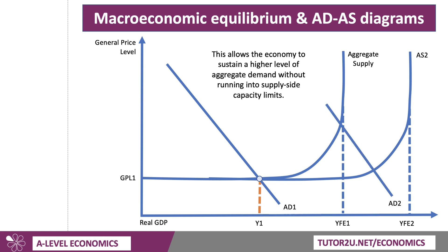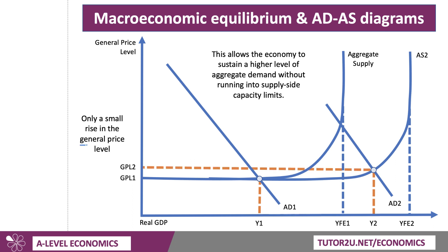This allows the economy to sustain a higher level of AD without running into supply-side capacity limits. Taking a level of AD — AD2 with perhaps higher exports, increased consumer spending and so on — you get a new equilibrium at Y2, a substantial increase in national output, but without necessarily the increase in inflation. So an increase in aggregate supply allows the economy to sustain a higher level of demand with only a small increase in the general price level.